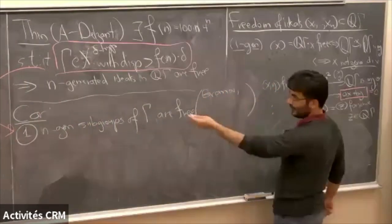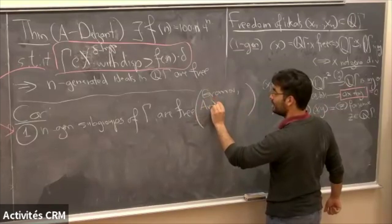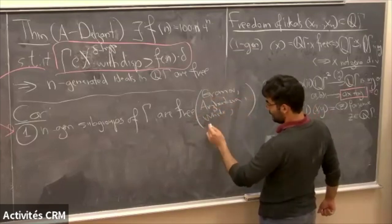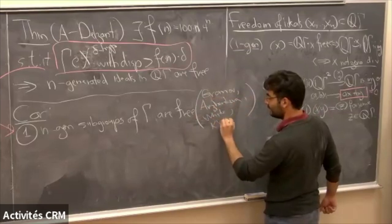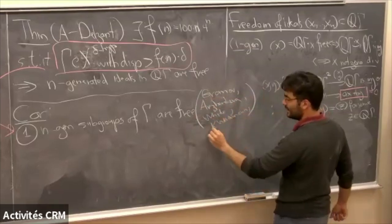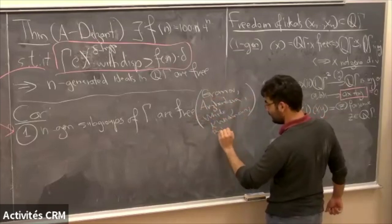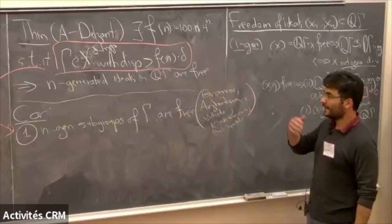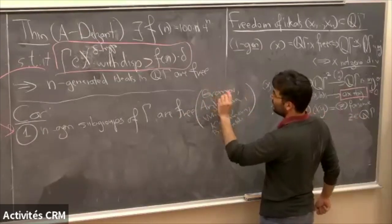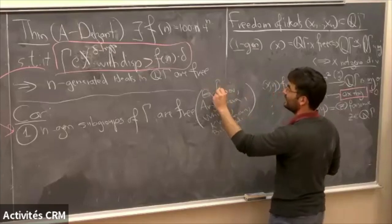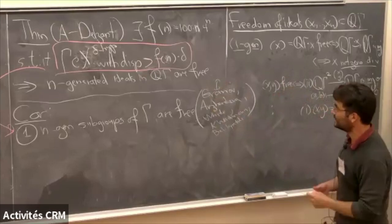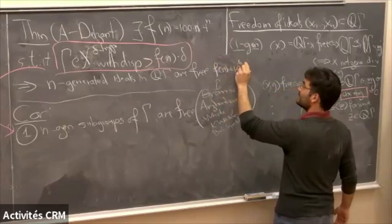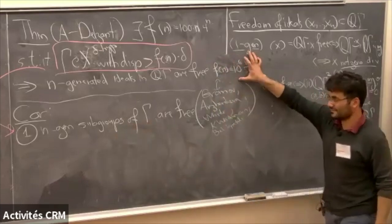Ian talked about some of these differences in his mini-course. Gromov has a version for subgroups, and the estimate Gromov has is f(n) around 10^{-6} · n / log n for the n-generated subgroup freeness result. Our construction gives something in the same spirit.